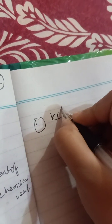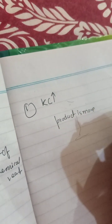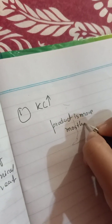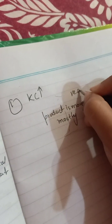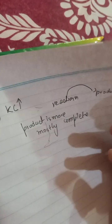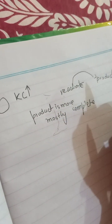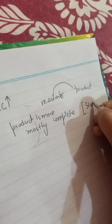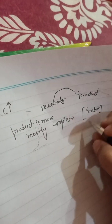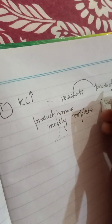If the Kc value is high, product concentration is more, meaning the reaction is mostly completed — the reactant has changed into product, so the reaction is complete. The product will be stable because the reactant has been converted into product, and product concentration will be more in the mixture.